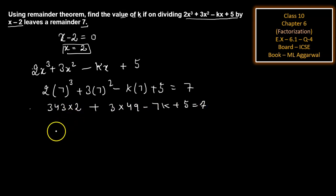Now take common 7. Then we get 49 × 2 + 3 × 7 - k + 5 = 7. This 7 cancels out with this.